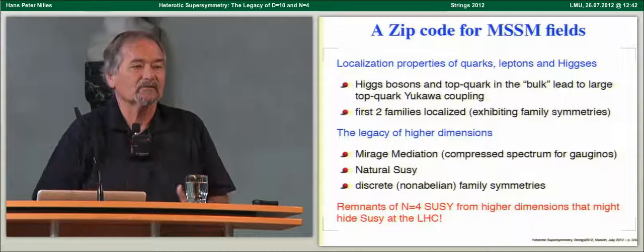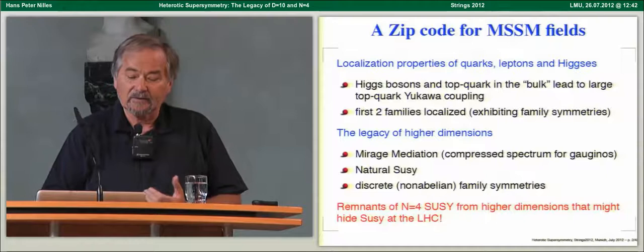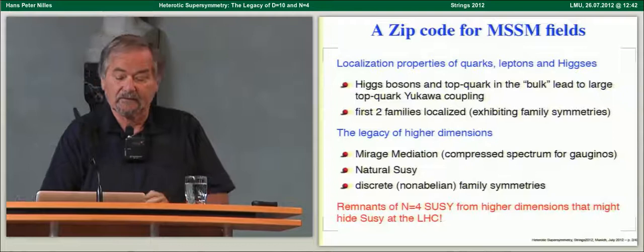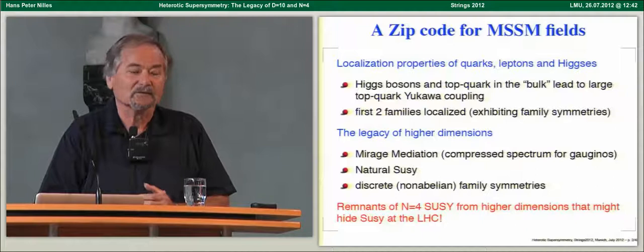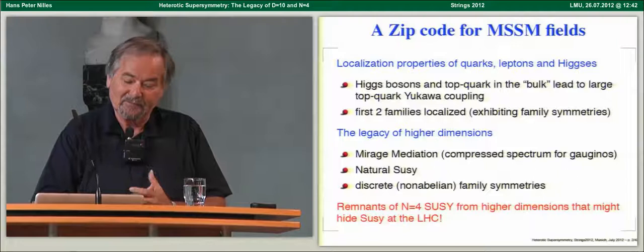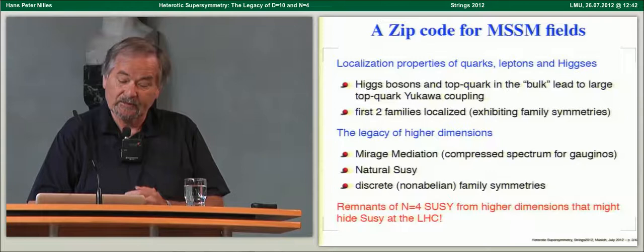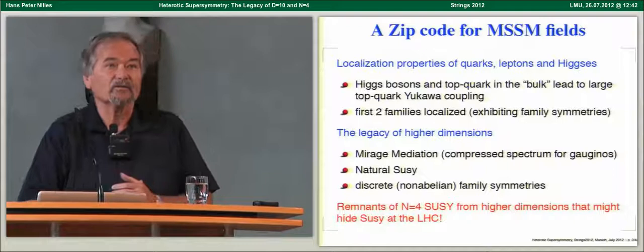This legacy of higher dimensions leads to mirage mediation, a scheme which appears in that theory. There will also be some aspect of what is called natural SUSY, although I have to apologize — it will not be exactly the natural SUSY that Savas was talking about; it might be some mixture with mini-split supersymmetry. There will also be discrete non-abelian family symmetries, and it is this remnant of N=4 supersymmetry that might actually hide supersymmetry at the LHC.